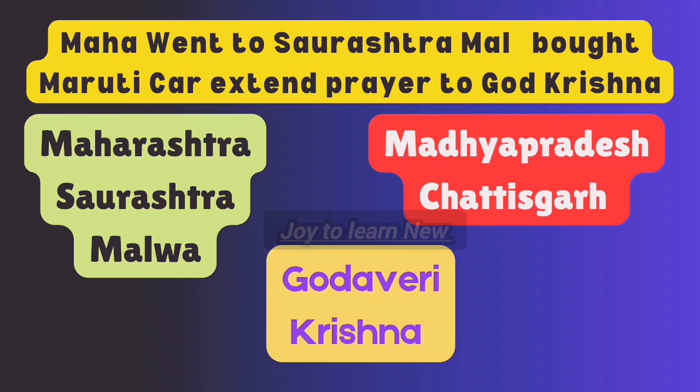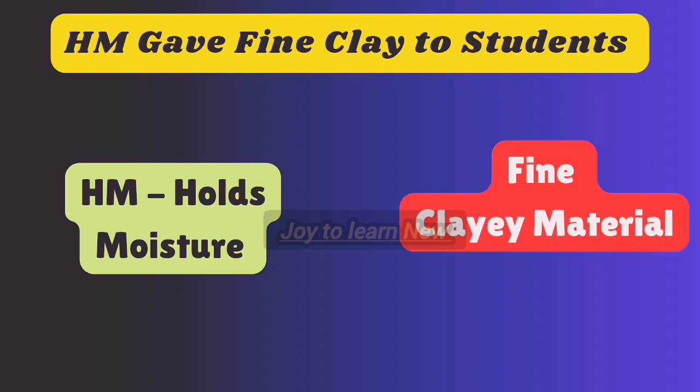To summarize, Black Soil covers Maharashtra, Saurashtra, Malwa, Madhya Pradesh, Chhattisgarh, Godavari and Krishna. In order to remember these regions, remember this shortcut: 'Maha went to Saurashtra Mall, bought Martikar and extended prayer to God Krishna.'